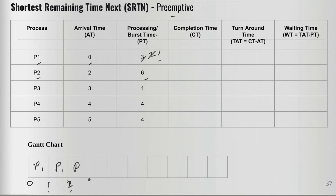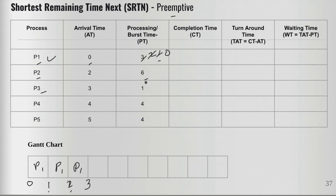We run P1 for one more unit — it is now done and finishes execution at time three. At interval three, P2 had already arrived and P3 has also arrived, with arrival times of two and three respectively. We compare remaining times: P2 has six, P3 has one. P3 has the shorter processing time, so we bring P3 in and run it for one unit. P3 completes at time four.